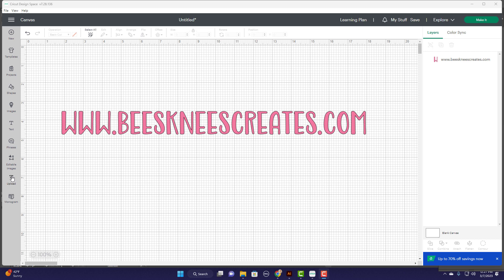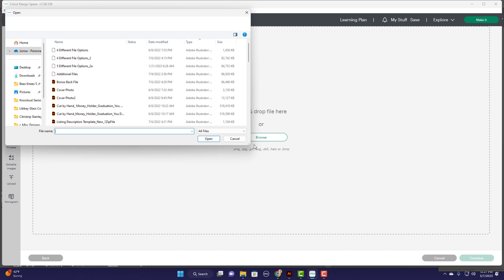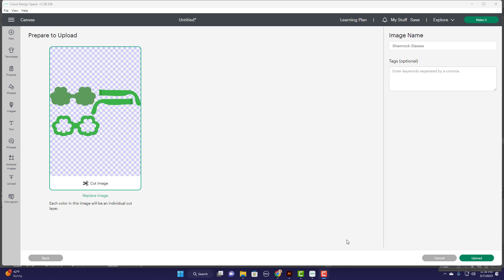So once you do that, download that, save that onto your computer. Then we're gonna come over here, hit upload, and we are going to hit upload image and go ahead and browse out to where you saved your file. Then once you find your file, go ahead and upload it, select it and add it to the canvas.